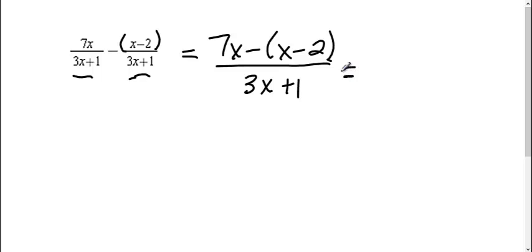Now the reason we put the parentheses is because we need to distribute that negative. So I get 7x, distribute this negative, I get negative x, positive 2.